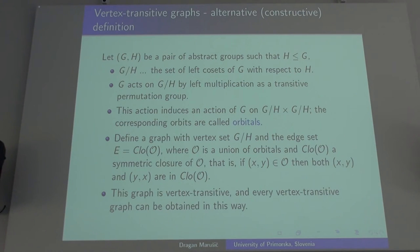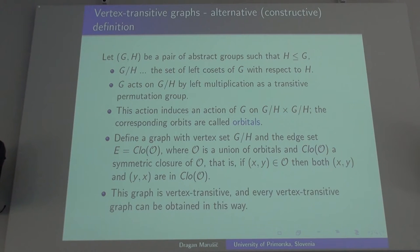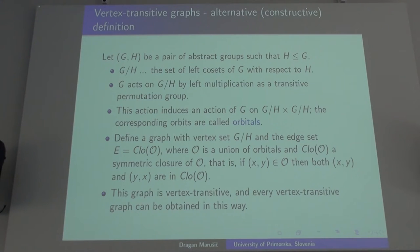A graph is vertex transitive when for any pair of vertices there is an automorphism taking one vertex to the other. I want to replace this by a more natural approach in pairs of groups. I have group G and subgroup H, and I take the left coset space. There is a natural action of G on this coset space by left multiplication, and this action is transitive on the cosets.